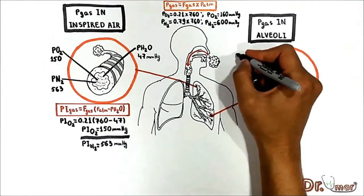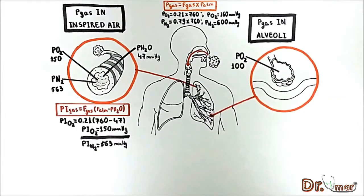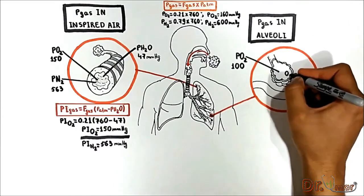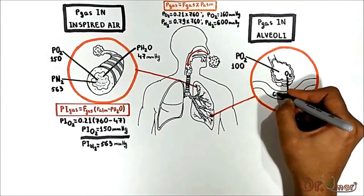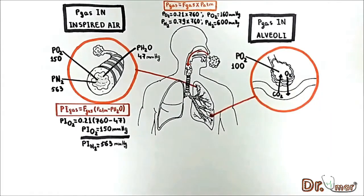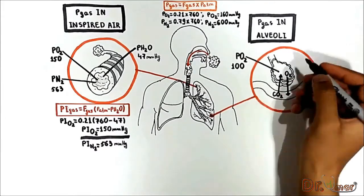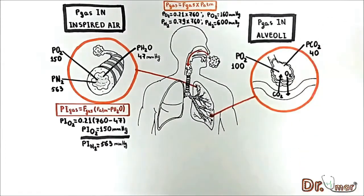The partial pressure of oxygen drops down to 100 mmHg. This happens because within the respiratory zone, oxygen diffuses from alveolar air to blood, while carbon dioxide diffuses from blood to alveolar air, resulting in change in alveolar gas composition. The partial pressure of oxygen drops to 100 mmHg and CO2 partial pressure is 40 mmHg.